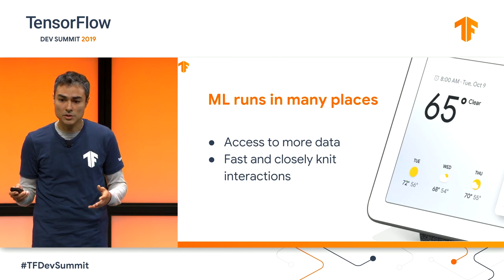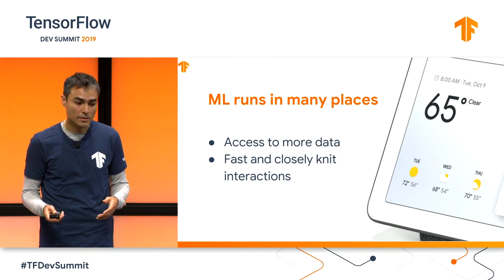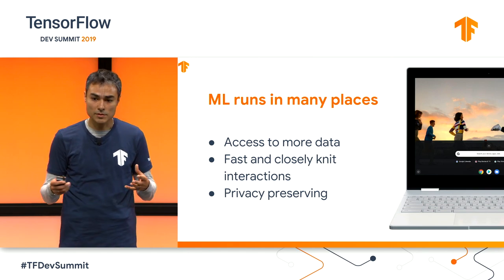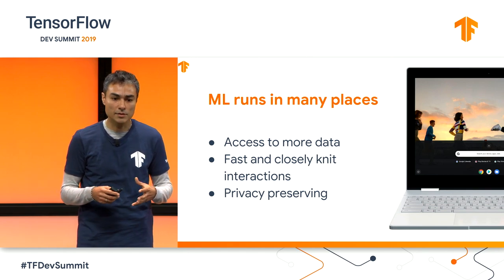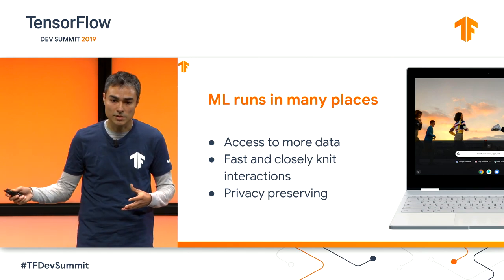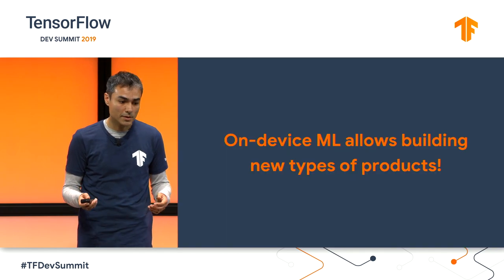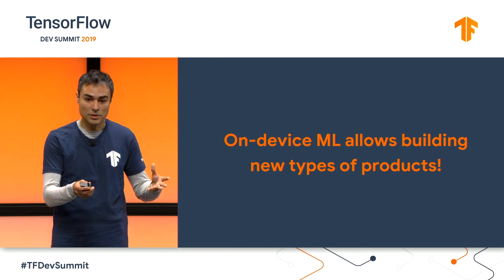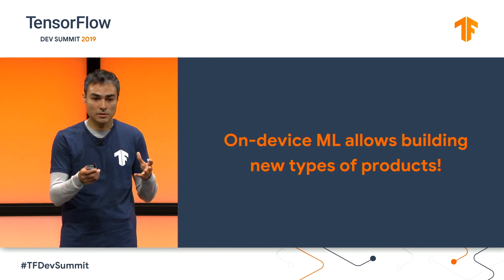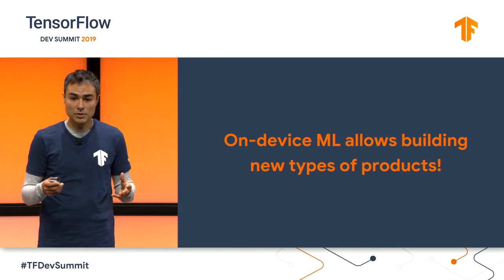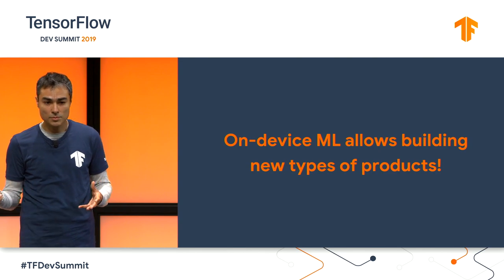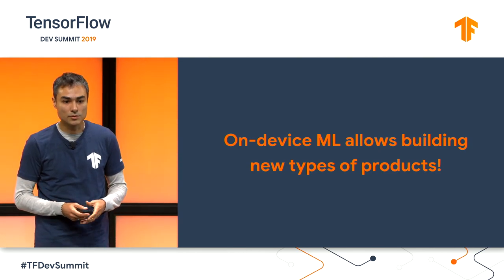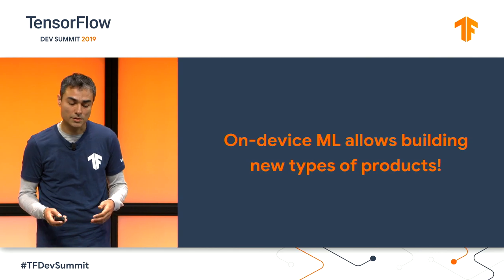Another advantage of running machine learning on device is that it has a strong privacy-preserving component, because the data stays on device — it doesn't necessarily have to go to the server. By building and allowing machine learning on device, we can build products that otherwise wouldn't really be able to work if you rely only on server-side execution.